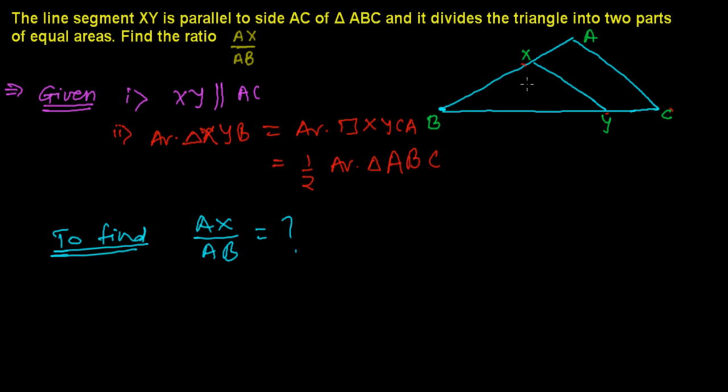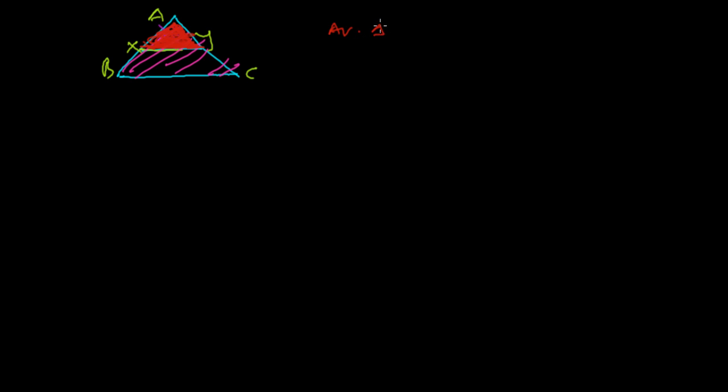This discussion is from the chapter Similarity of Triangles. Before solving this question, let me introduce a key concept. In similarity of triangles, if triangle ABC is similar to triangle XYZ, then the area of triangle XYZ over area of triangle ABC equals the square of their corresponding sides — for example, AY over AC, all squared.